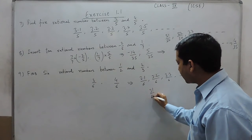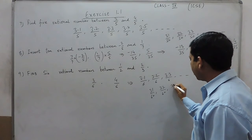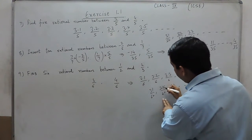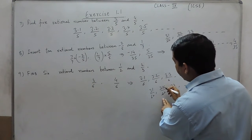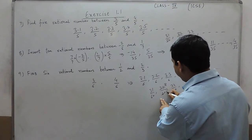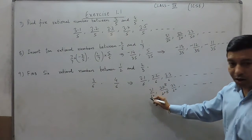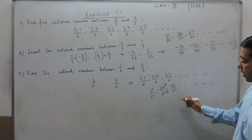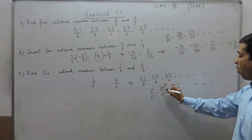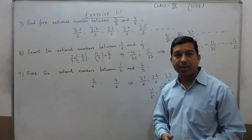For 3.1/6, I can write 31/60. For 3.2/6, this is 32/60. For 3.3/6, this is 33/60. We can also simplify these numbers to their lowest form — 32/60 simplifies to 8/15 when cancelled by 4. 31/60 cannot be cancelled further. 33/60 simplifies to 11/20. All these rational numbers are between the two given rational numbers.